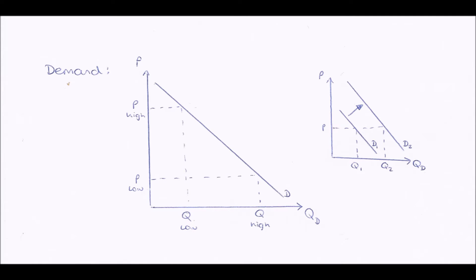Next we have demand curves. On their y-axis they have price, and on their x-axis they have quantity demanded. The curve slopes downwards from left to right, because when the price is high it's less attractive for consumers to buy goods, so the quantity demanded will be low. When the price is low, there is an incentive to buy the good because it is cheaper, so more people will demand it and the quantity demanded will be high.